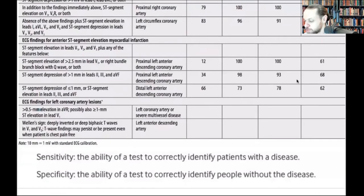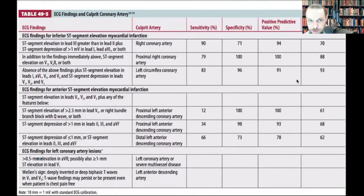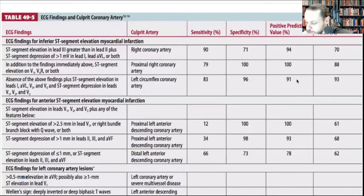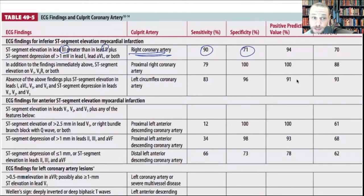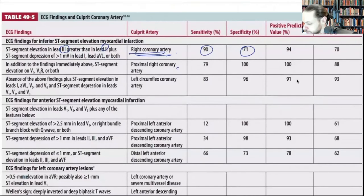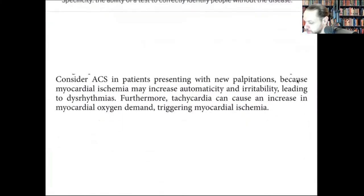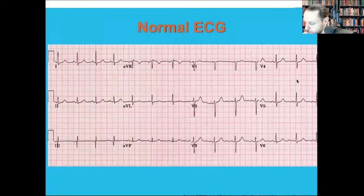Sensitivity is the ability to correctly identify disease; specificity ensures you identify those without it to avoid false positives. For example, if lead III elevation is greater than lead II elevation, you're most likely dealing with right coronary artery involvement — sensitivity 90%, specificity 71%. These correlations help you determine which coronary artery is involved based on the elevation pattern.